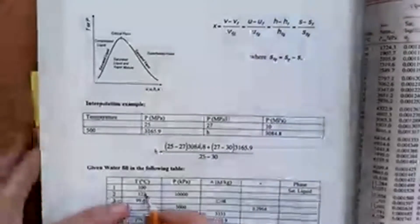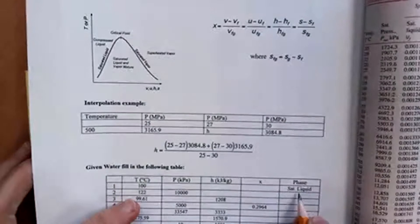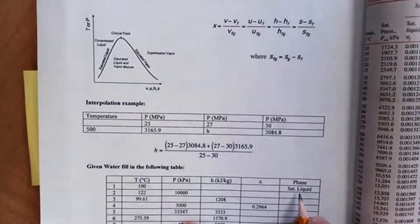All right, let's do the first one. 100 degrees C and you're given that it's a saturated liquid. So this one's pretty straightforward.